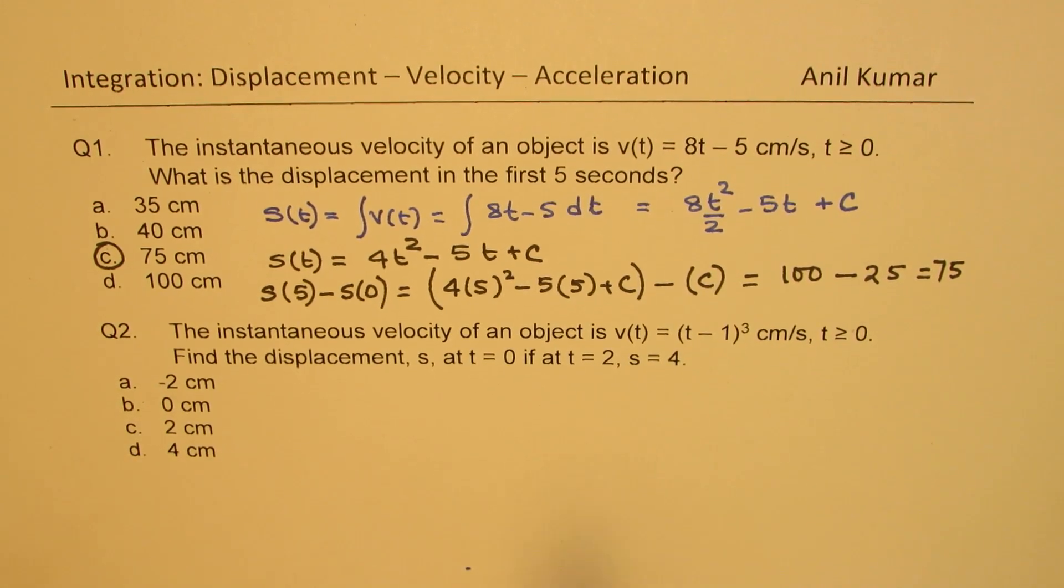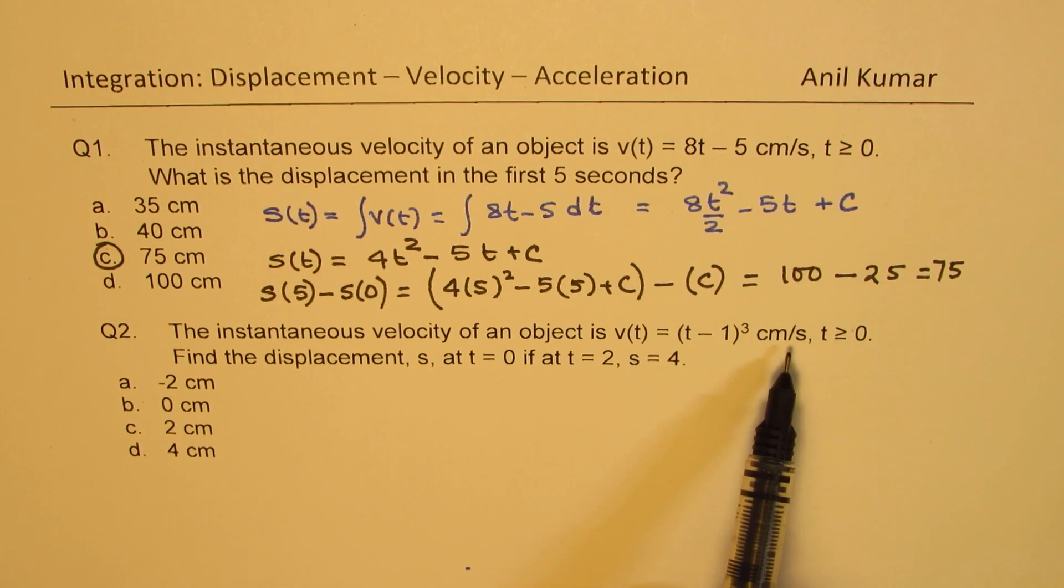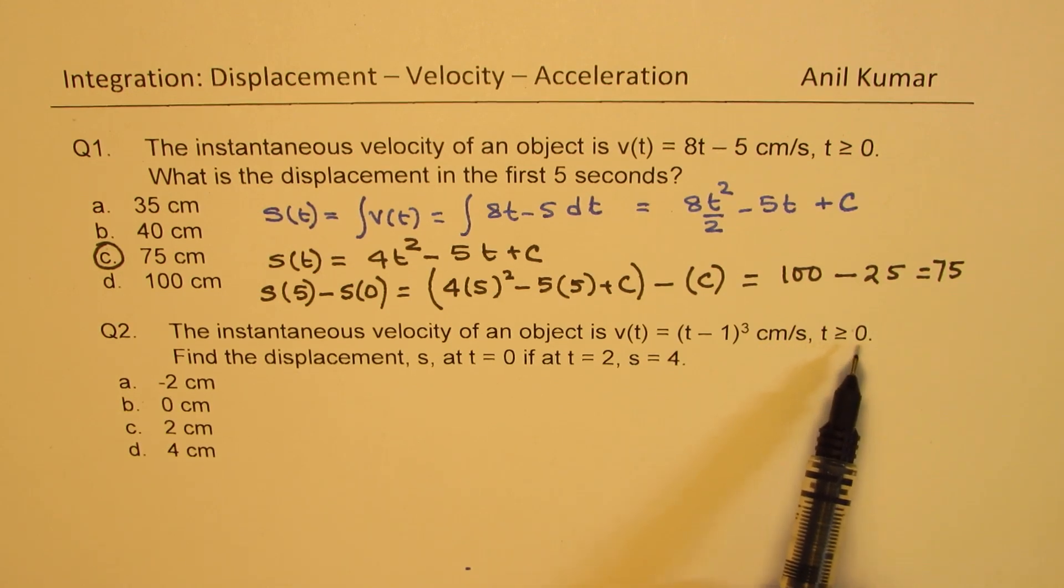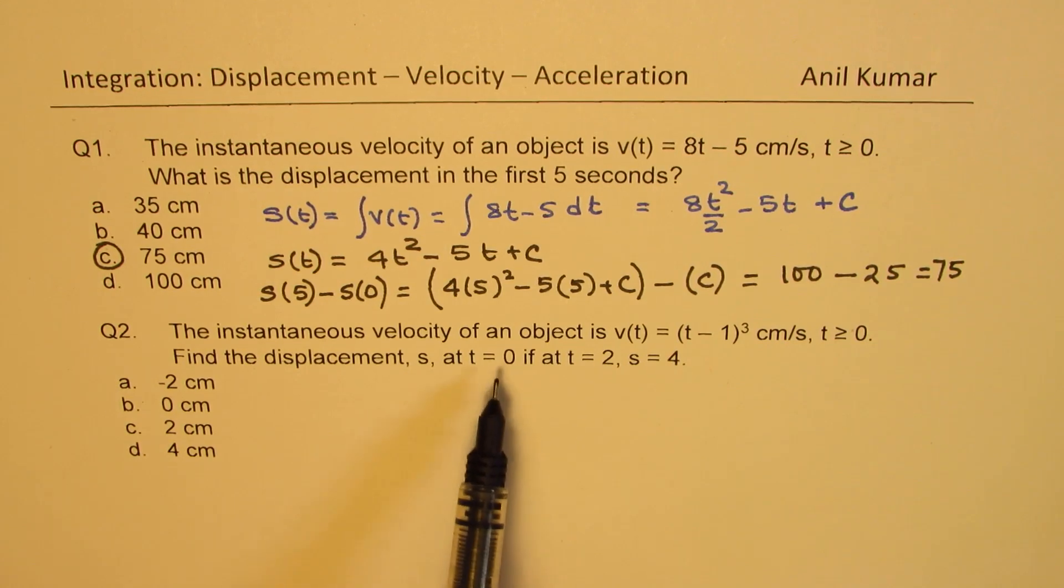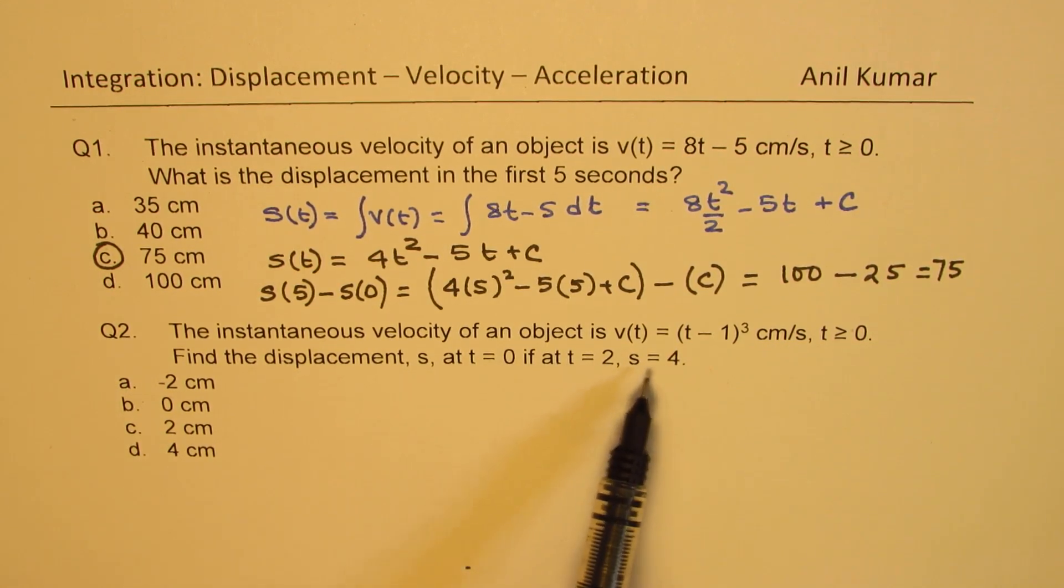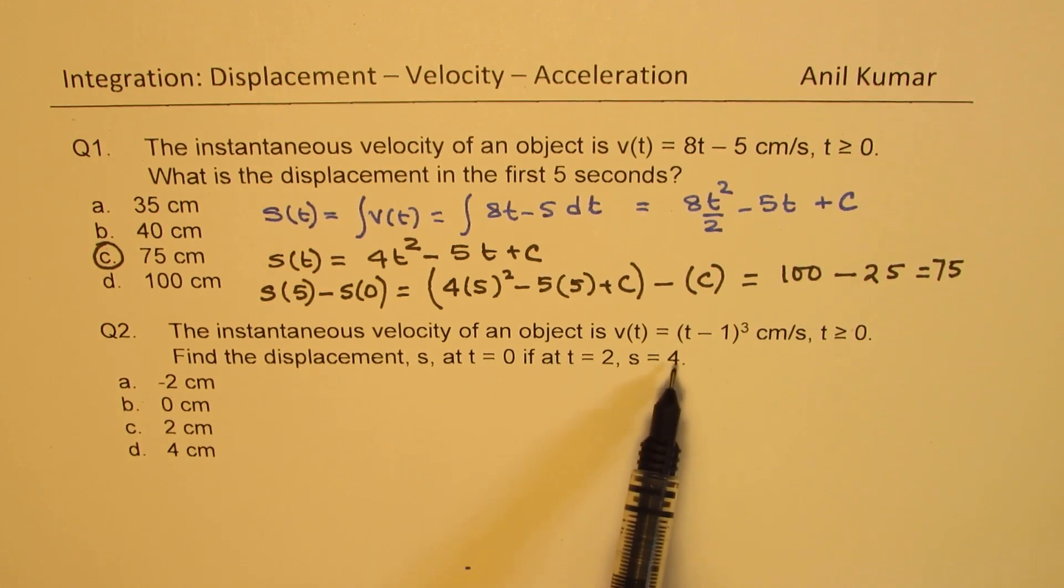Now the second, so displacement is change in position. So that is why this is correct answer. Question number 2: The instantaneous velocity of an object is (t minus 1) whole cube centimeters per second, where t is greater than or equal to 0. Find the displacement s at t equals 0. If at t equals 2, s is given to us as 4. So here we are given the initial condition. We can find the constant.